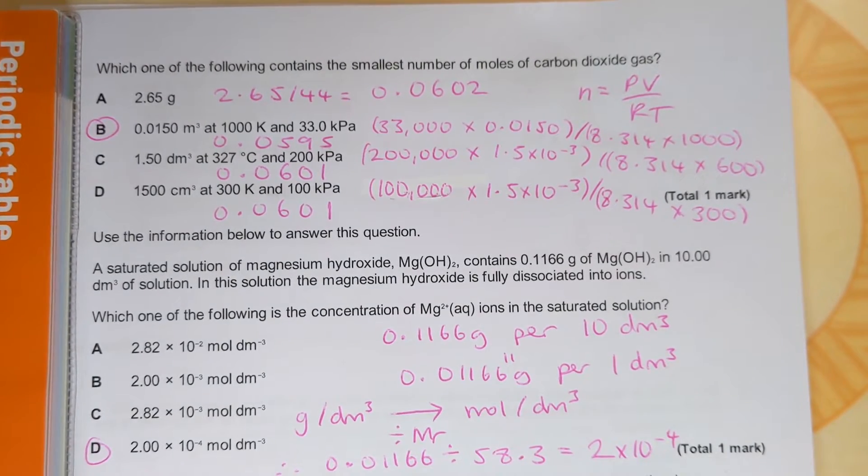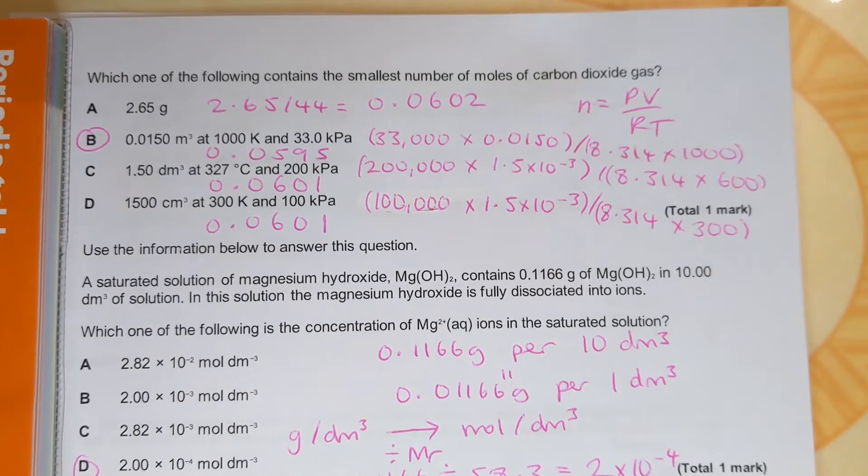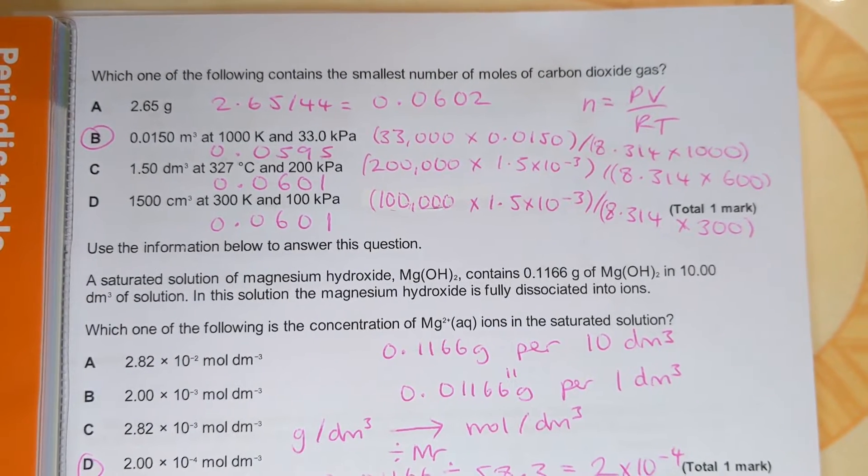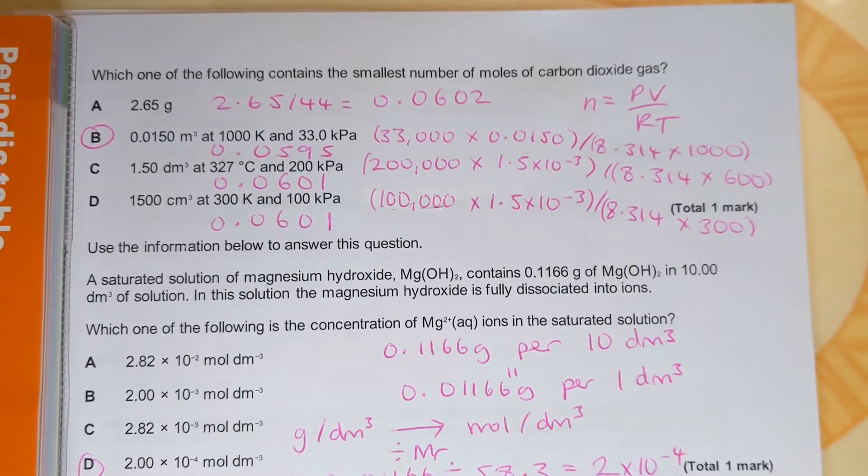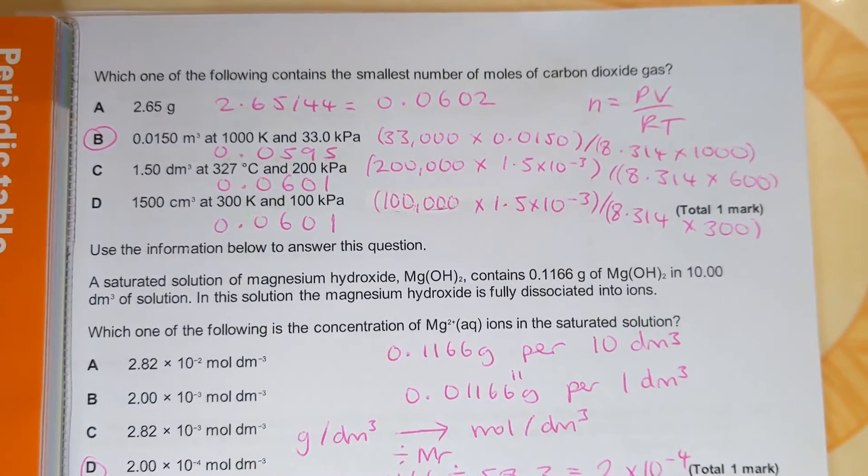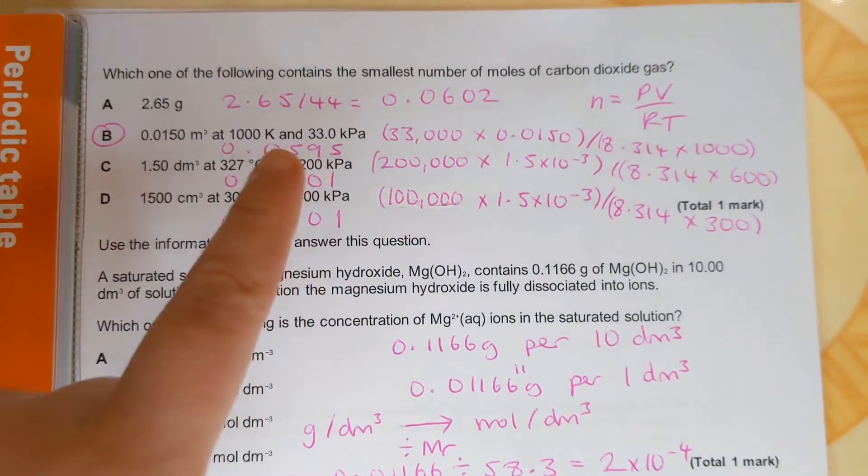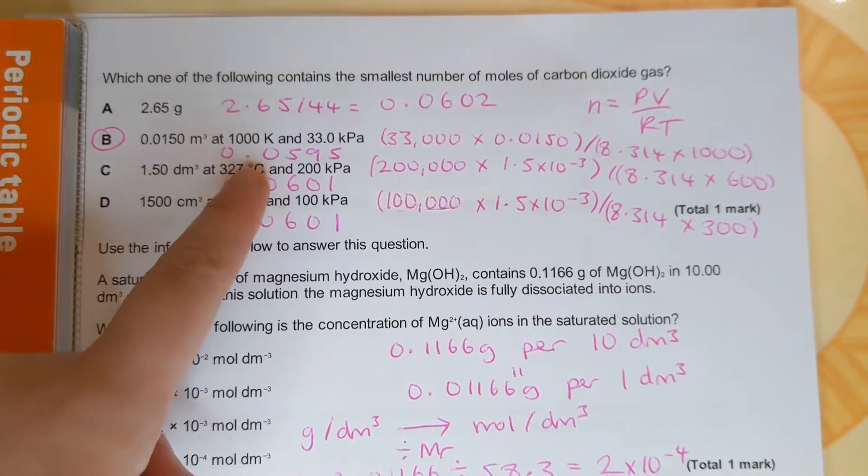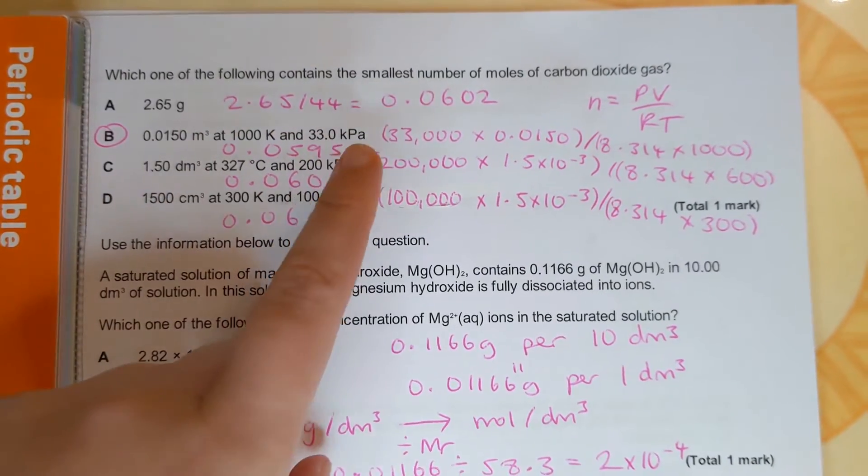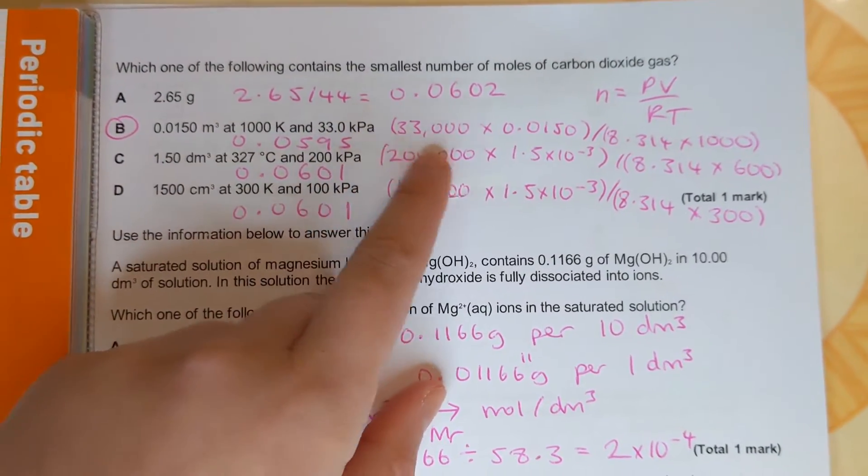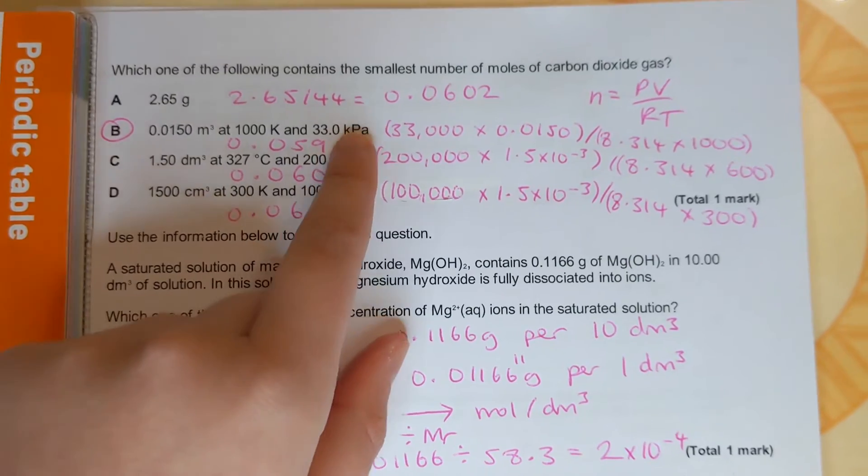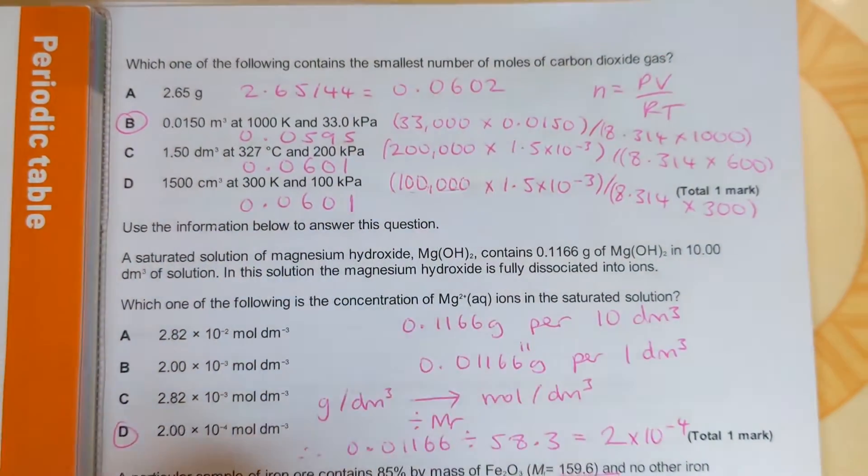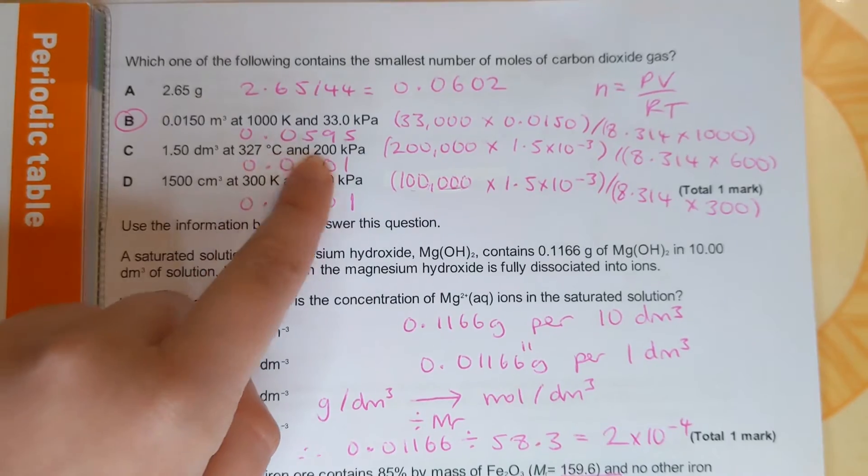And the rest of them we have a pressure, a temperature and a volume, so that's the ideal gas equation and we need to rearrange that in terms of n to calculate moles. And make sure our units are in SI units, so that's meters cubed for volumes, kelvin for temperature and pascals for pressure. So we have to times these kilopascals by a thousand to convert those and we end up with this one, B, being the smallest number of moles of gas.